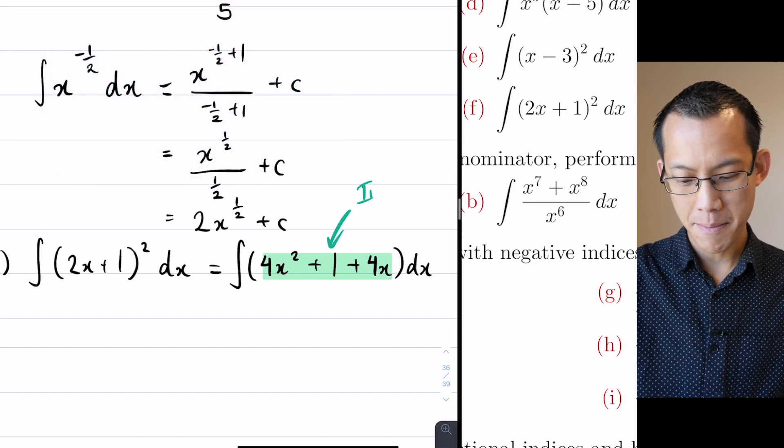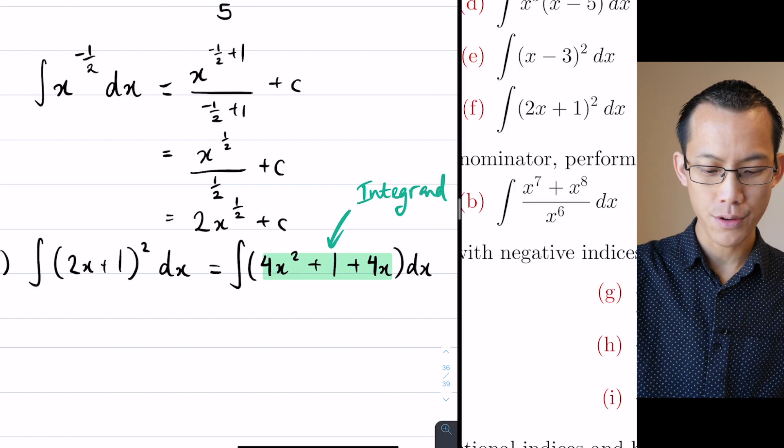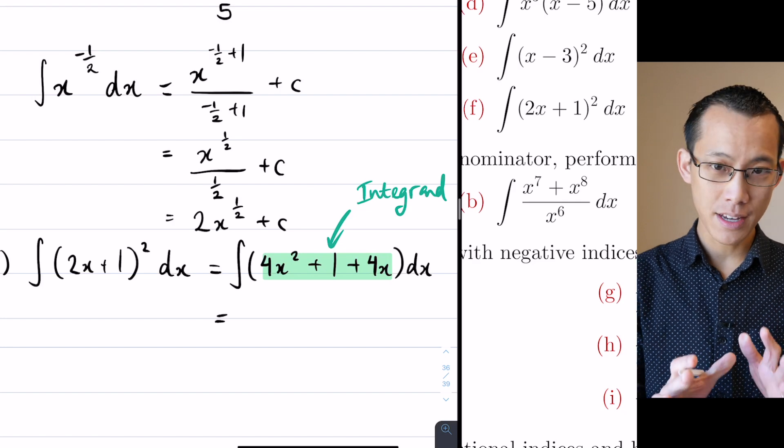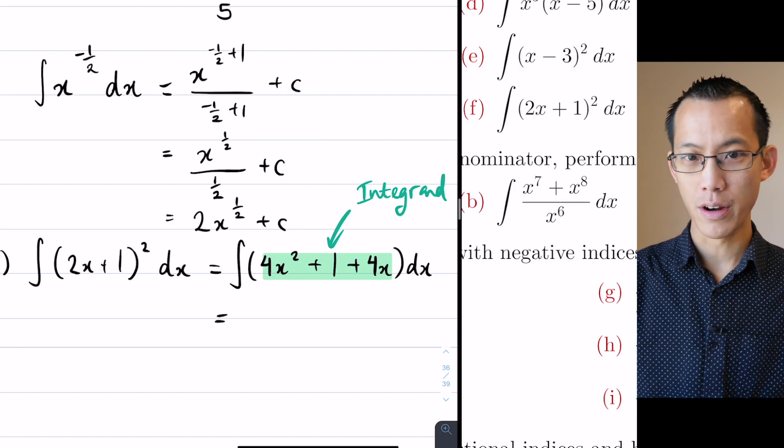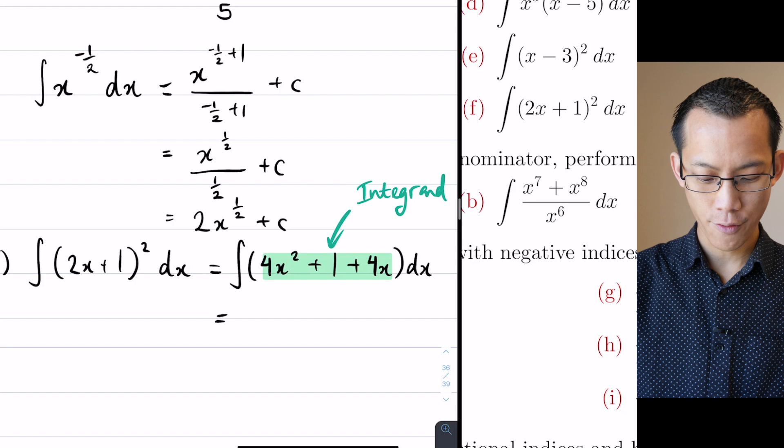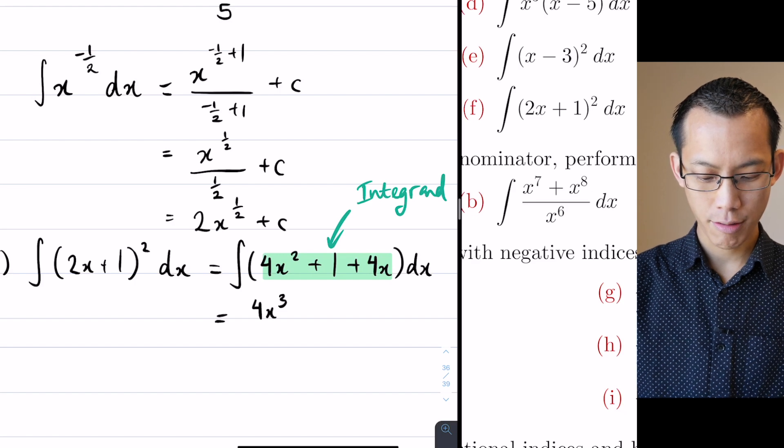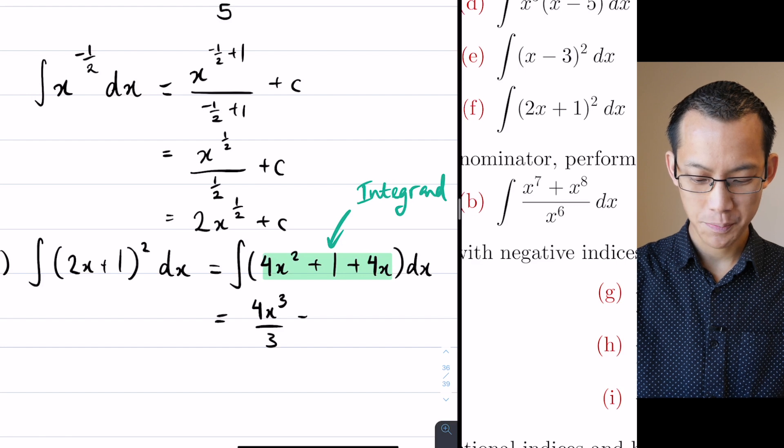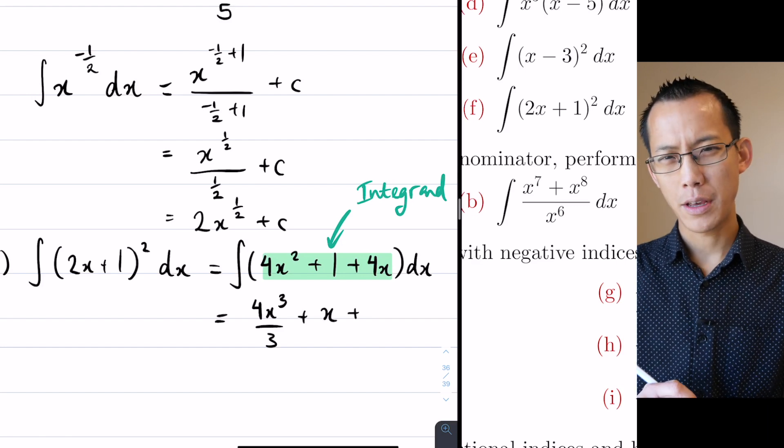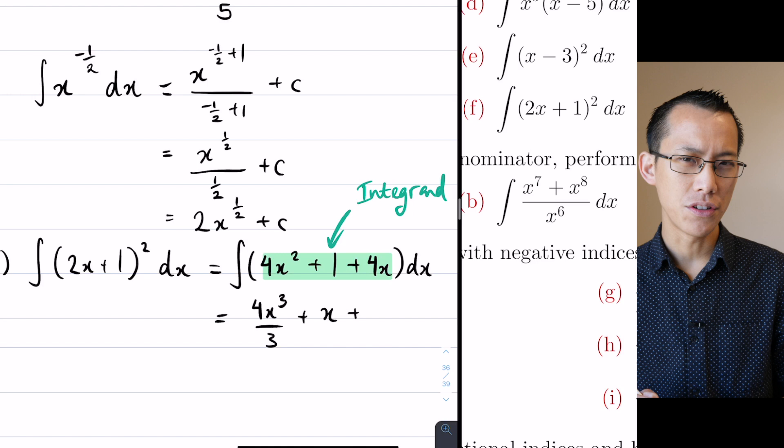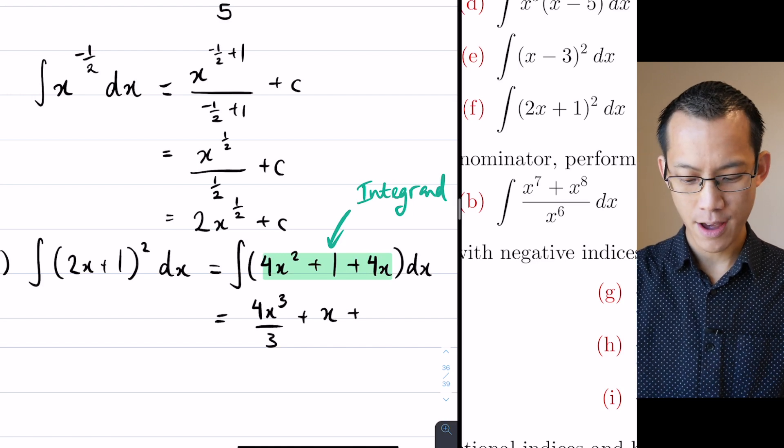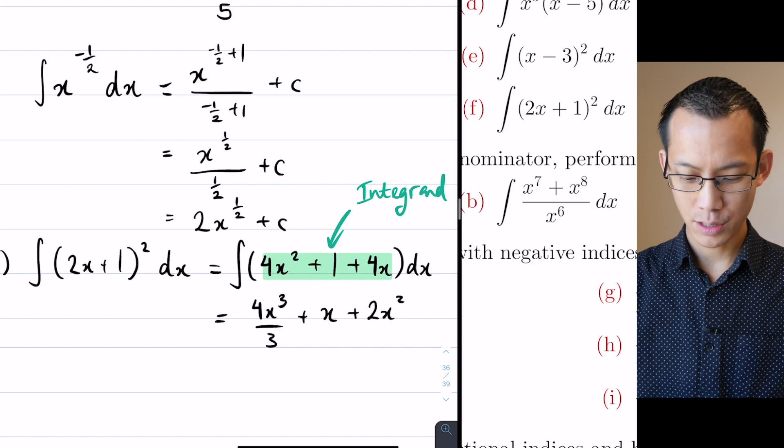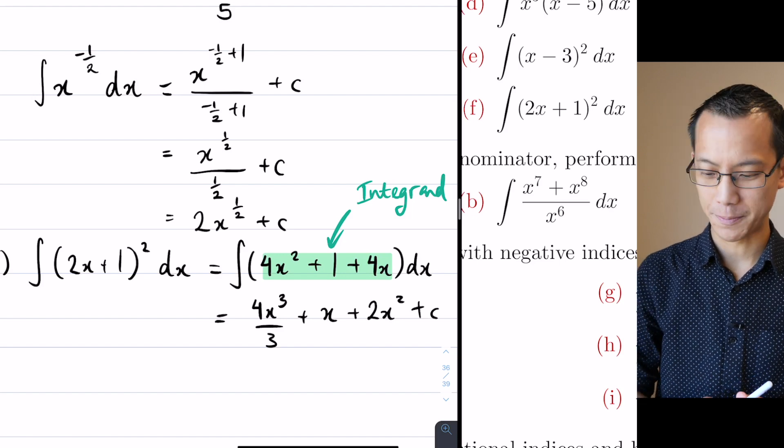So by making that expanded, we can now go through term by term and do this just like the other questions we were doing. This time, now that I think we've got the hang of it, I'm going to do it a little more quickly. So I'm going to get that 4x cubed on 3. The integral, increase the index, plus x, plus now this guy here will become 4x squared on 2, but hopefully you're seeing there, well, that 2 and that 4 are going to cancel, leaving me with 2x squared plus my constant.